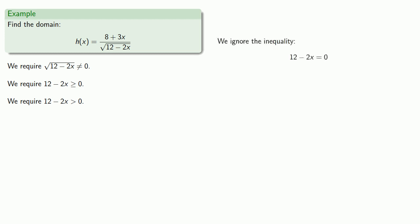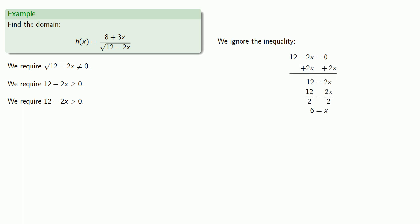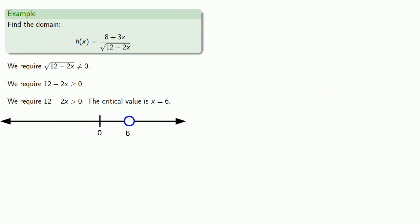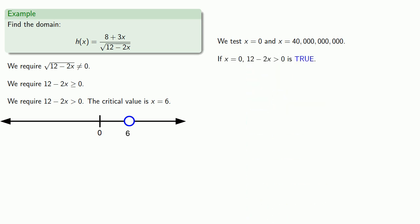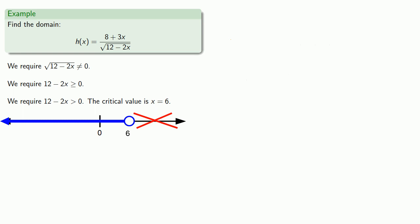So we'll solve this by ignoring the inequality and solving the equation, getting the critical value x = 6. Because x = 6 solves the equation but we don't allow equality, x = 6 is not part of the solution, so we put an open circle at x = 6. We'll test x = 0 and x = 40,000,000,000. At x = 0 the inequality is true, so we shade the region to the left. At x = 40 billion the inequality is false, so we don't shade the region to the right. Finally, we can express our answer in interval notation.